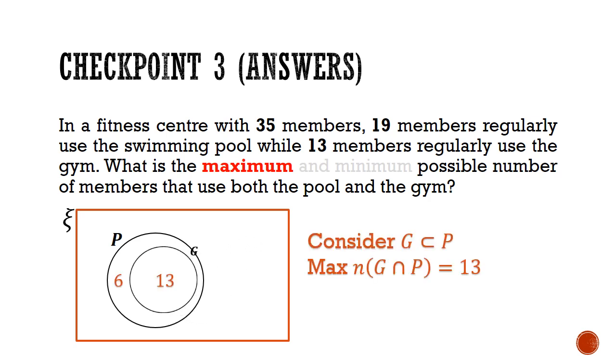To maximize the intersection between the pool users and the gym users, we can fit the set of G inside P. This will give us a maximum value of 13. This occurs when G is a subset of P.